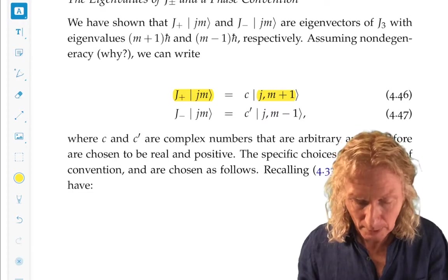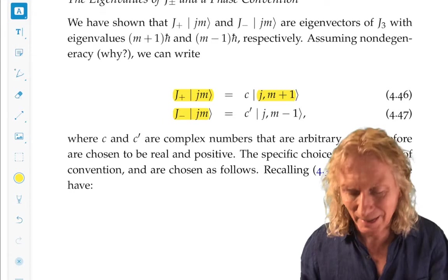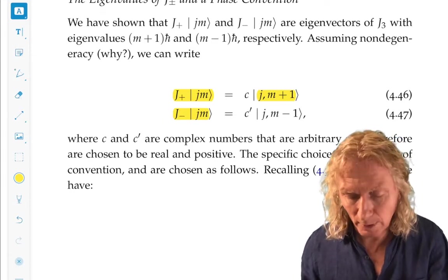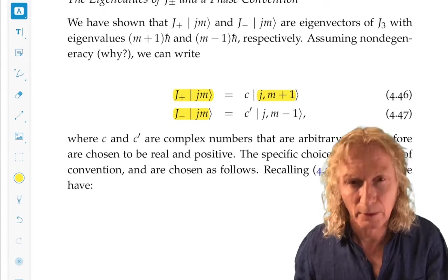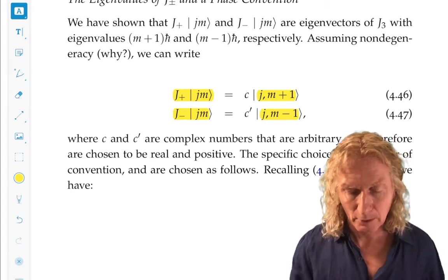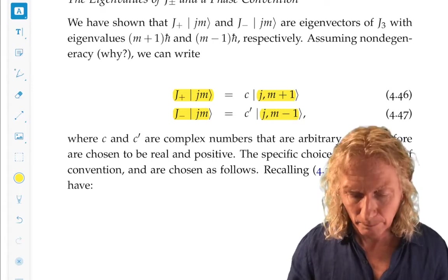J plus and J minus acting on ket Jm gives another eigenvector of J3 and J squared, but we decrease the value of M by one. Now eigenvectors are not unique.